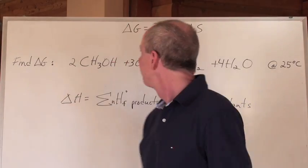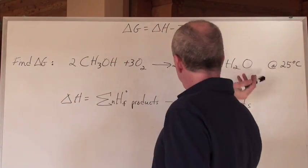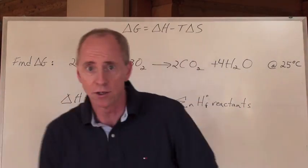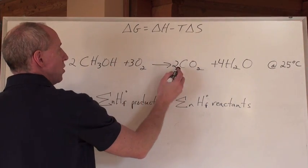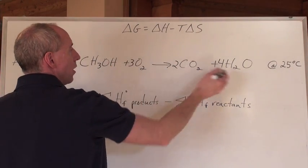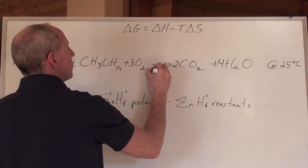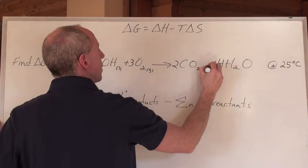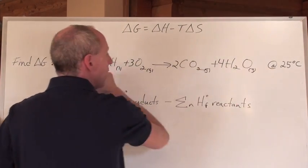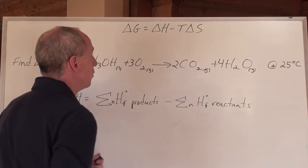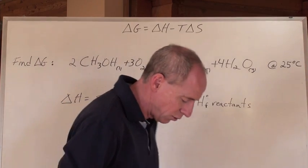Here's a question: find the delta G for this reaction. The reaction is methanol undergoing combustion to form carbon dioxide and water. Methanol is a liquid, while carbon dioxide and water are gases. You're asked to find the delta G value at 25 degrees Celsius.